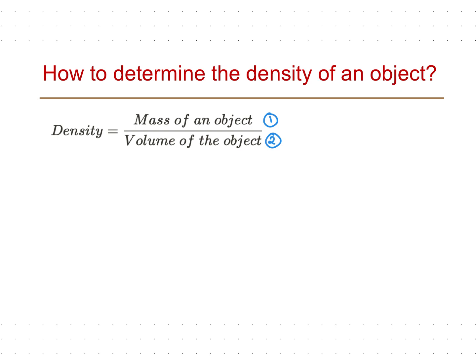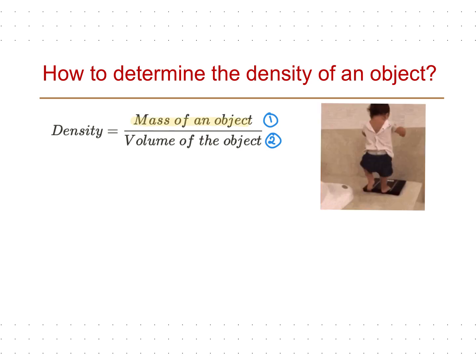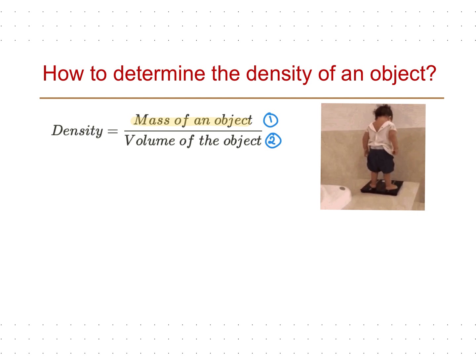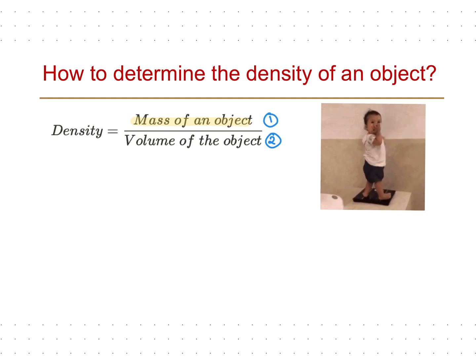The first question is: how do we measure the mass of an object? We take the object and directly place it on a balance and measure the reading.